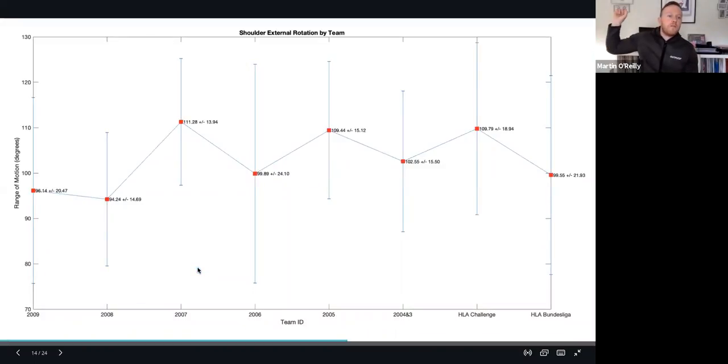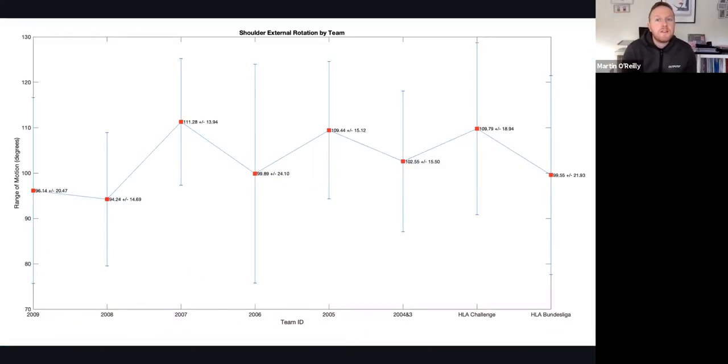In terms of the shoulder flexibility, what was very interesting is there was no real differences between the groups dependent on their age or team. This is because mobility can be developed at all ages and should be developed at all ages. What you can see across all teams is there's some very strong scores up around 120, 130 and beyond, but there's also some very low scores within the standard deviations such as 80 degrees.